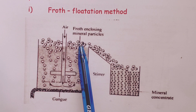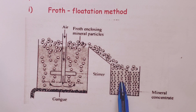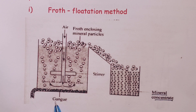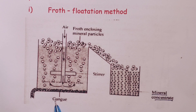This froth is drained into another container, and we obtain what is called mineral concentrate, which we then dry and expose to further processing. The gangue, or impurities, settle at the bottom and are then removed. This is the description that simplifies the froth-flotation method.